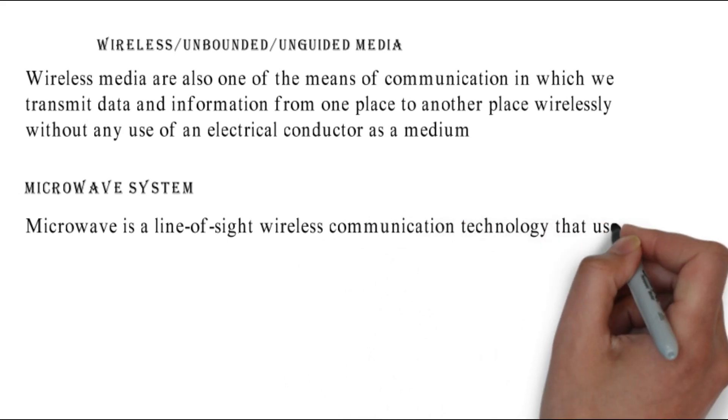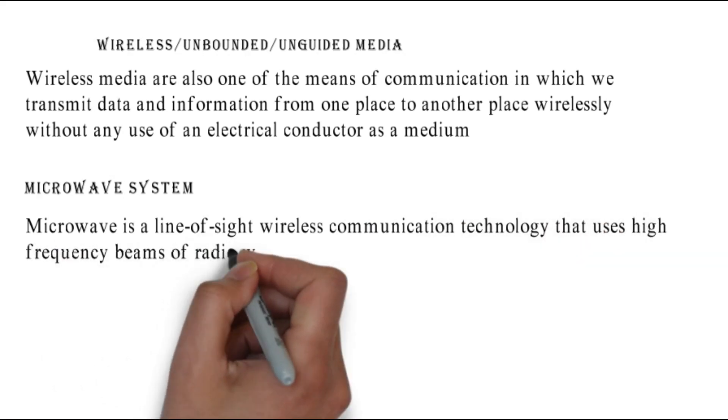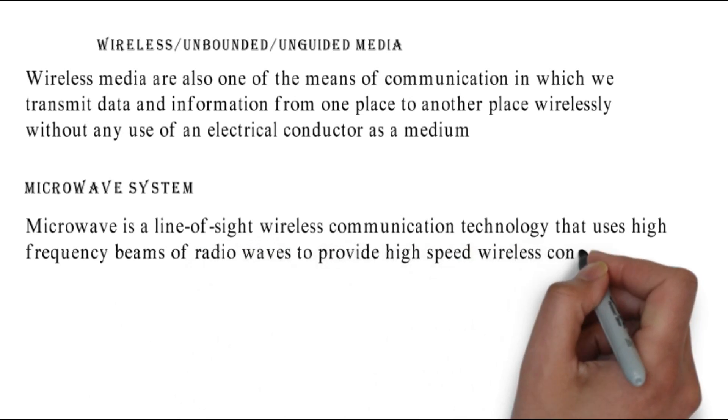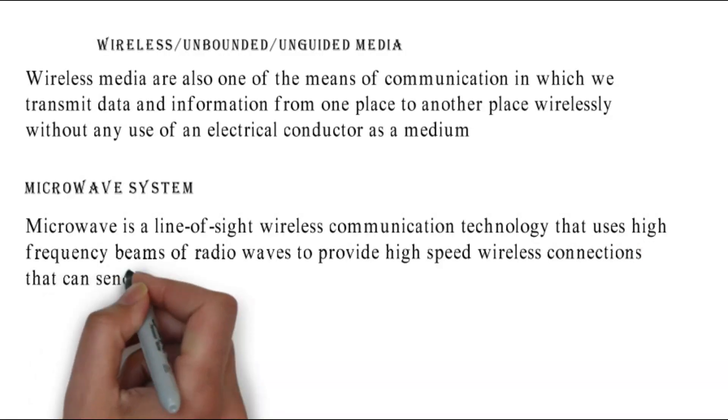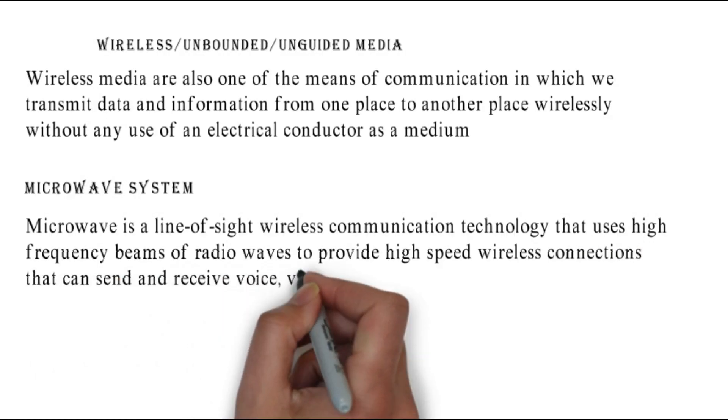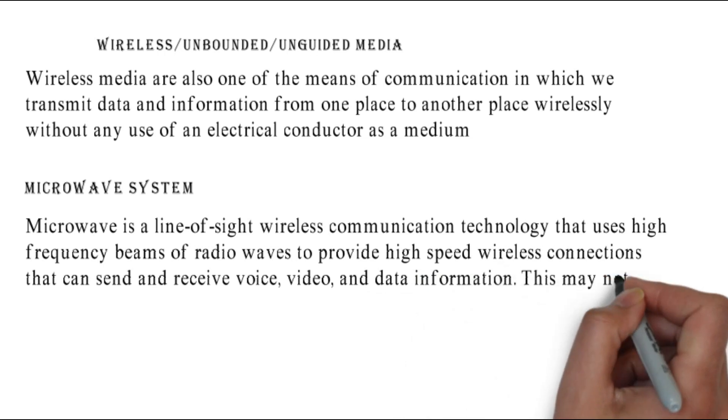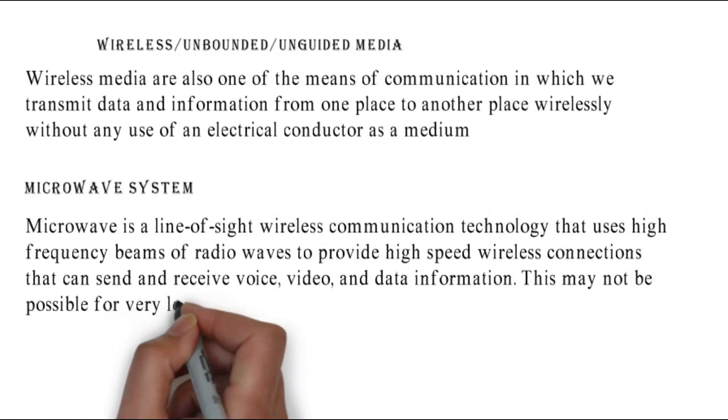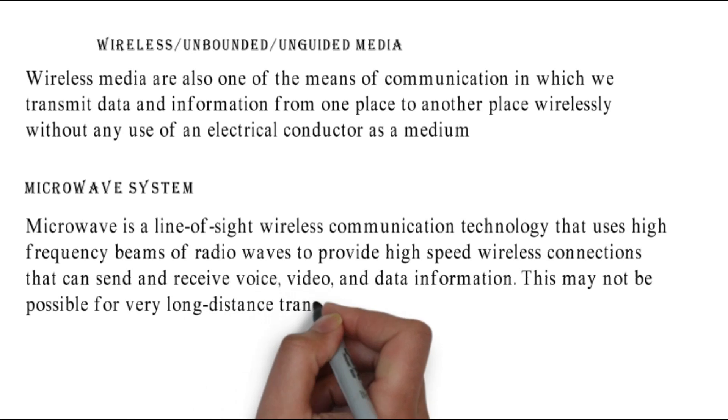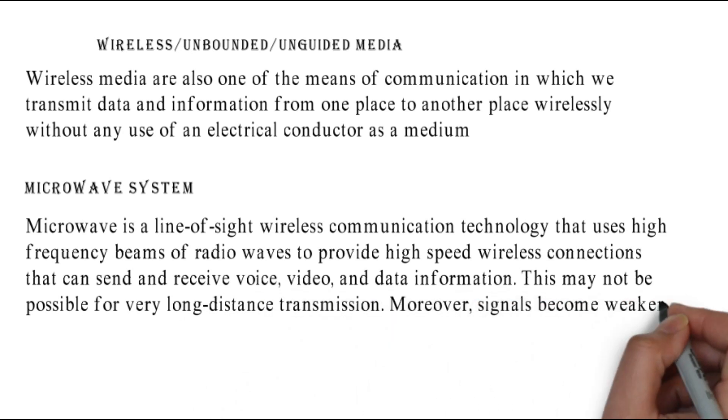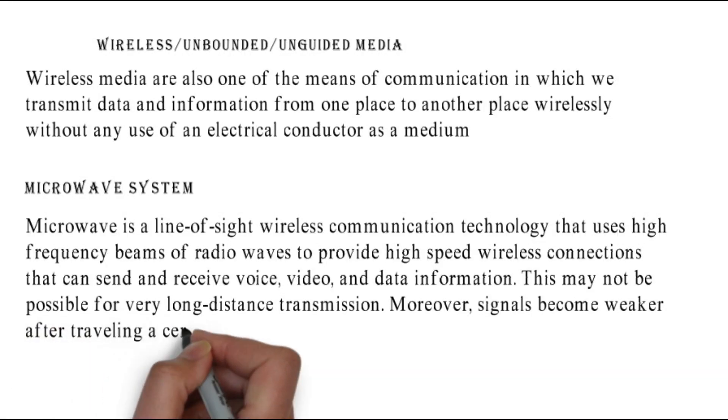Microwave system. Microwave is a line-of-sight wireless communication technology that uses high frequency beams of radio waves to provide high-speed wireless connection that can send and receive voice, video, and data information. This may not be possible for very long distance transmission. Moreover, signals become weaker after traveling a certain distance and require power amplification.